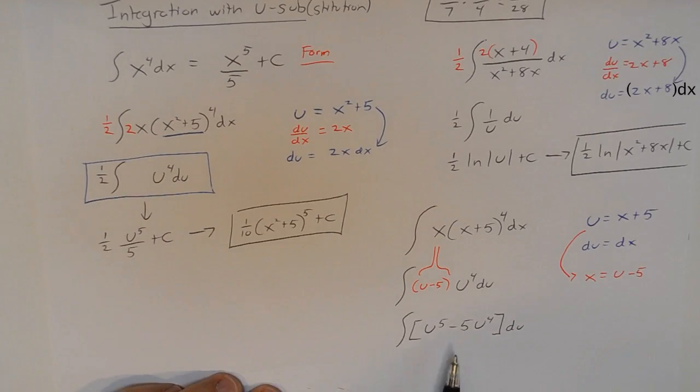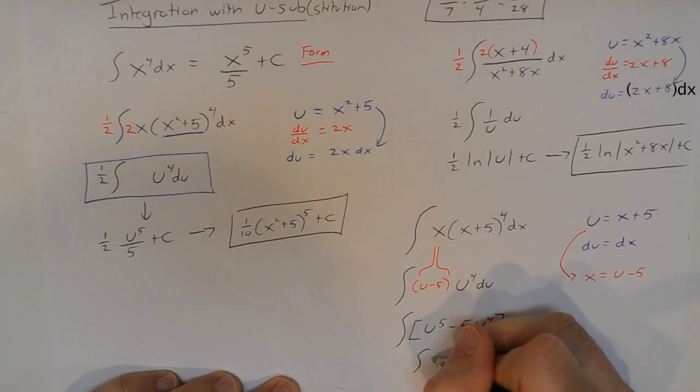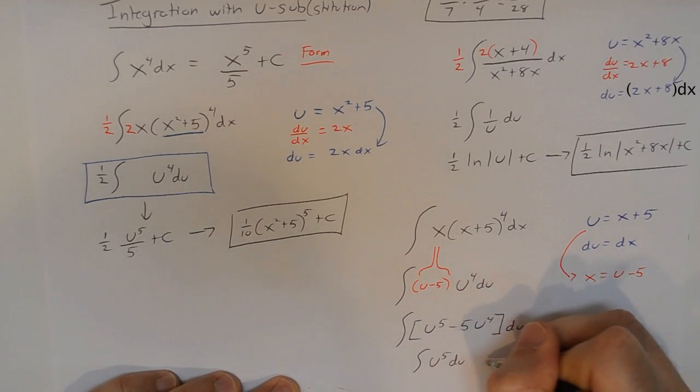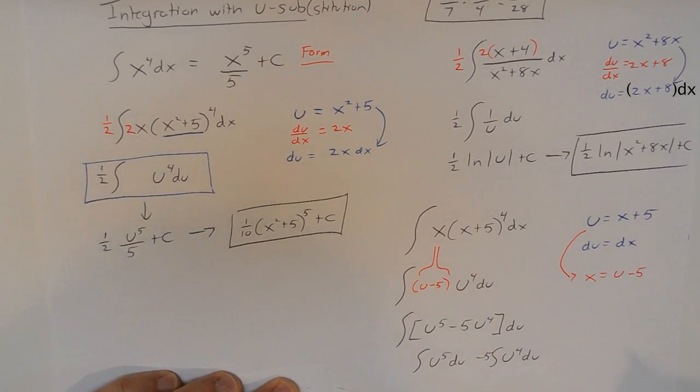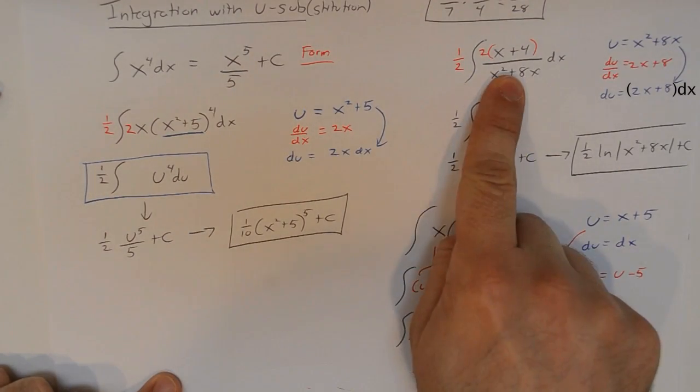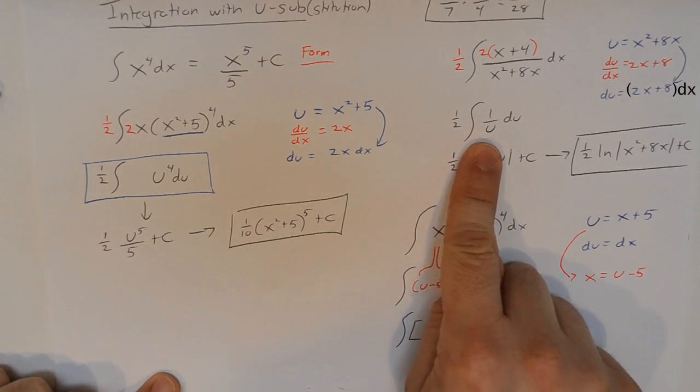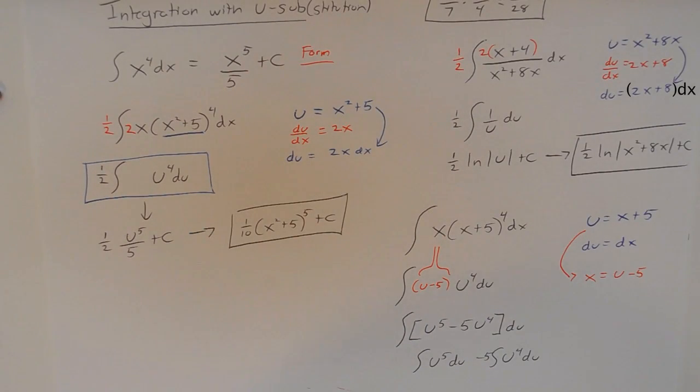I can now distribute this u to the fourth into this binomial. This will become the integral of u to the fifth minus 5u to the fourth du. And hopefully, you recognize that that is really just two simple integrals to do. Now we've turned it into two simple integrals. We can integrate sub u back in to get our answer. So, that's integration with u substitution. The idea is to take an integral that you can't do and turn it into something that you can do. I hope that helps. If you like this video, please like and subscribe. And feel free to email me if you have any questions.